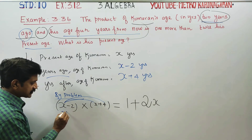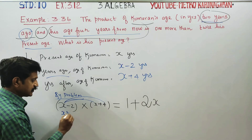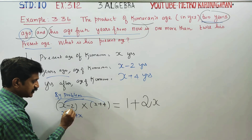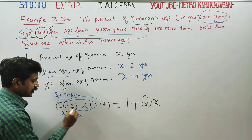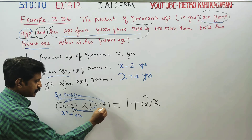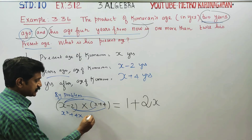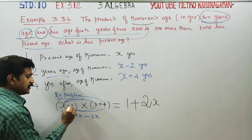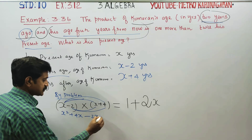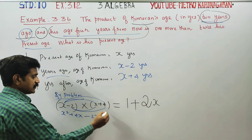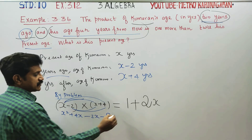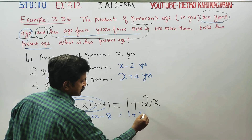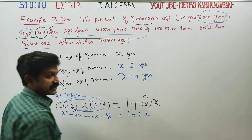Expanding: x into x gives x squared. x into 4 gives 4x. Minus 2 into x gives minus 2x. Minus 2 into 4 gives minus 8. So we get x squared plus 4x minus 2x minus 8, which is equal to 1 plus 2x.